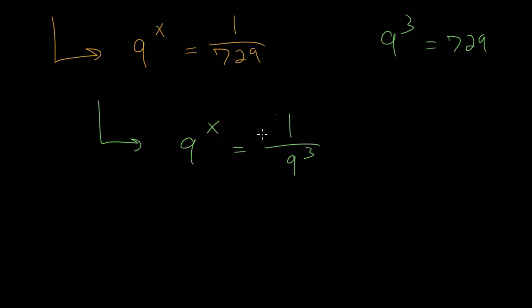And this 1 divided by 9 to the third power, we can rewrite using a negative exponent, where the base is still 9. 9 to the x, this is 9 to the minus 3 power.